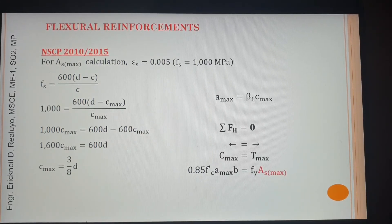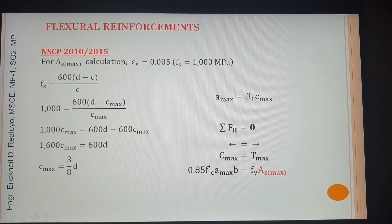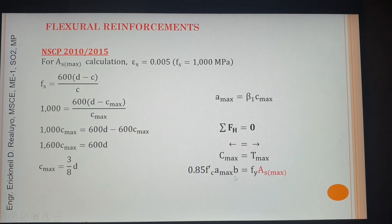To get As_max from c_max equals 3/8·d — if you have c, you get a by multiplying c by beta1. So a_max equals c_max times beta1. Then from the free body diagram, summation of horizontal forces: C equals T, so 0.85·f'c·a_max·b equals T_max, assuming the beam is a rectangle.